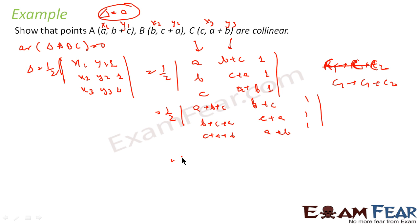If I take a plus b plus c common, what I get is 1, 1, 1; b plus c, c plus a, a plus b; 1, 1, 1. And this I have done by saying C1 equals C1 divided by a plus b plus c. And thus I can see that two columns are same. So I can say that area is 0. Since the area is 0, that means the points are collinear.